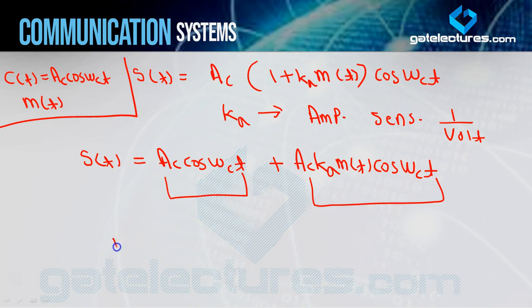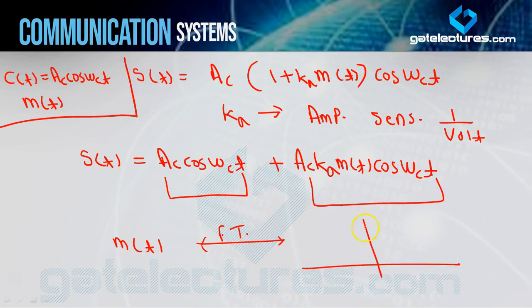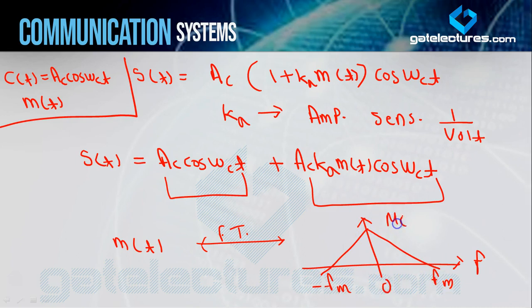If I look at M(t), its Fourier transform M(F) is a triangular wave — a triangle spanning from −FM to +FM, with the peak at 0, M(F). I am considering this M(T) Fourier transform as M(F).